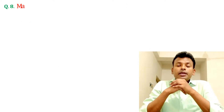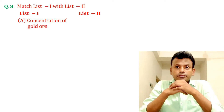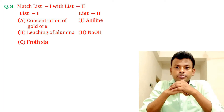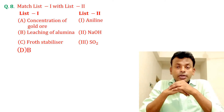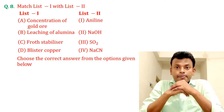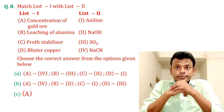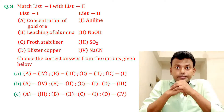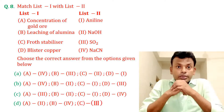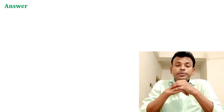Question number eight: Match list one with list two. Choose the correct answer from the options given below — option A, option B, option C, or option D. This question was set in JMN 27th June 2022 morning shift. Answer: Option B is the correct answer.